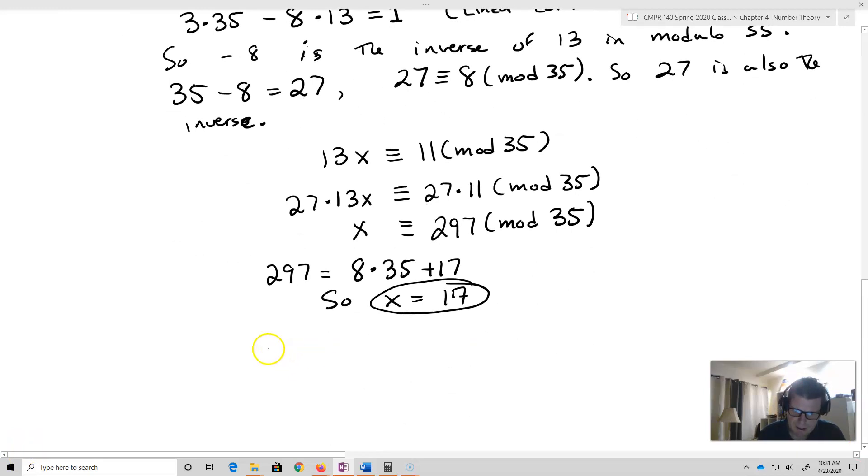Now let's go and check it. I'm going to take 13 times 17 plus 3. That's going to equal 224. And then we'll find out, well, 224 mod 35. Is in fact going to equal 14 because 224 equals 6 times 35 plus 14. And so hence we've checked it and we've checked our answer.